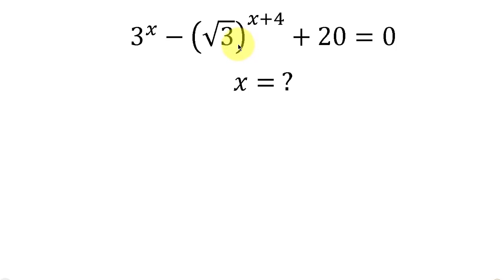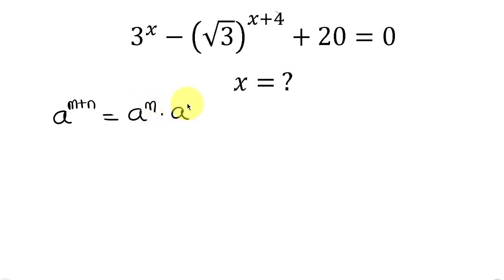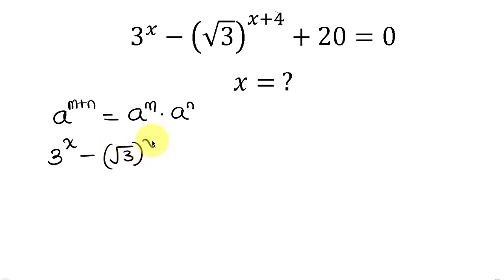Our first step will be to apply the law of indices. The law of indices says when I have a to the m plus n, this is the same as a to the m times a to the n. We're going to be applying this to this expression, so this becomes 3 to the x minus — writing this in this form — the square root of 3 raised to the x, times the square root of 3 raised to the 4.